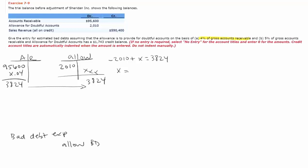So if I do some algebra, x is equal to $2,010 plus $3,824, so x is equal to $5,834, and that's the amount that will come down in my journal entry. So this is your answer to part A.